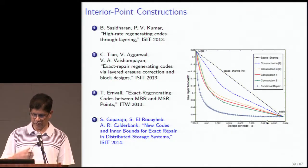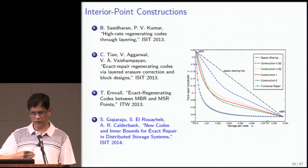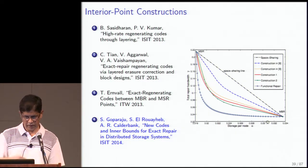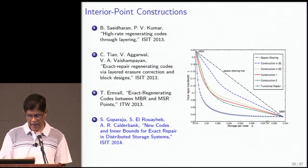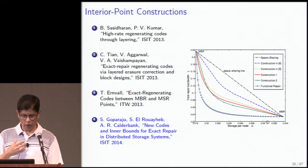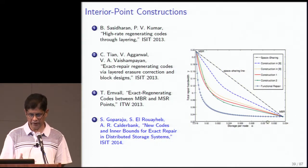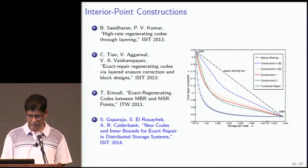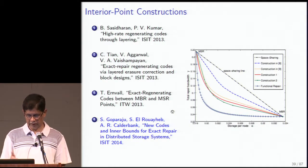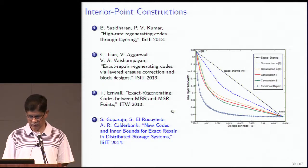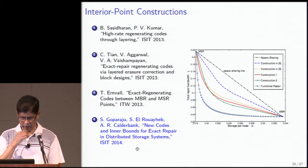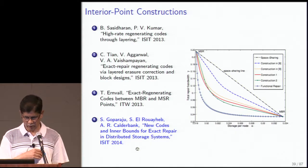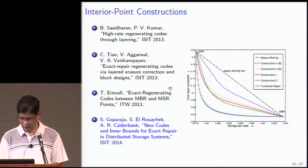It turns out we can improve the bound for all n, k, and d, showing that the exact repair trade-off differs from the functional repair trade-off except in the region close to the MSR point. For example, for the 5-4-4 case, the functional repair bound and our new outer bound together with interior point constructions produce a curve where there is one point at which they meet — the first known optimal code that does not lie on the functional repair trade-off.